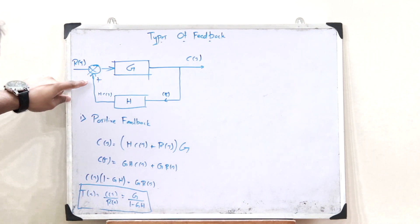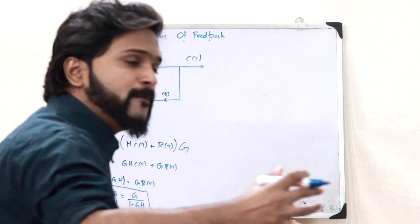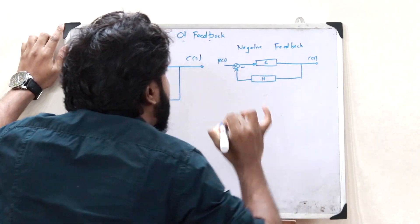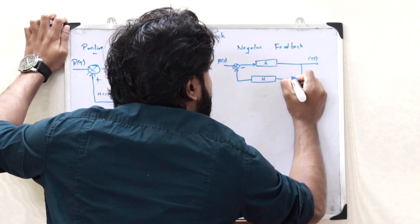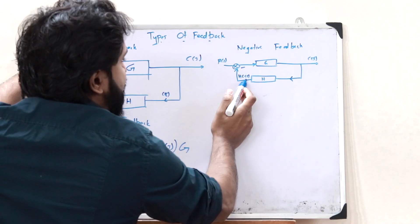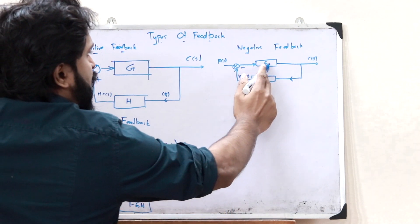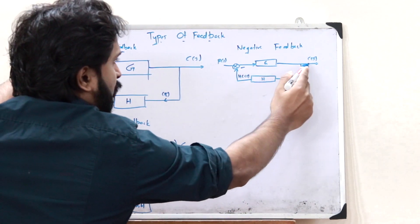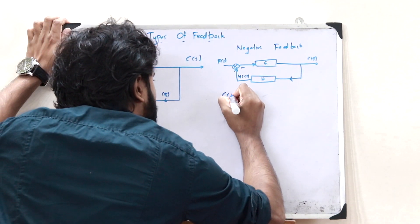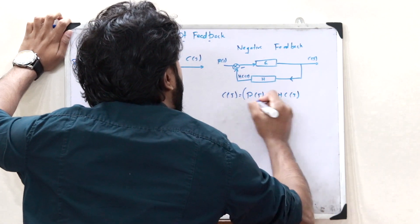Next, let us see the case where rather than adding, we are subtracting the feedback element — that is, negative feedback. Here, rather than adding the feedback element, we are subtracting it. The output signal C of S is passed through the feedback, and we get H into C of S. This H into C of S is subtracted from R of S and passed through G, and we obtain output C of S. So this output is given as C of S equals (R of S minus H into C of S) multiplied by G.